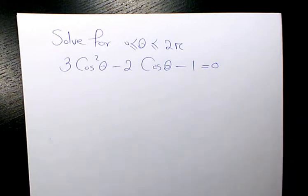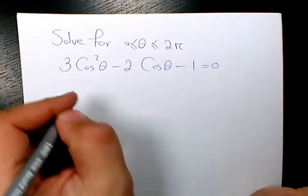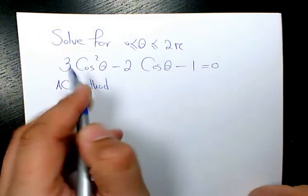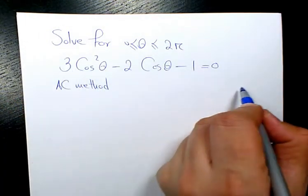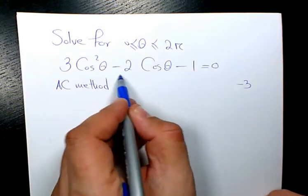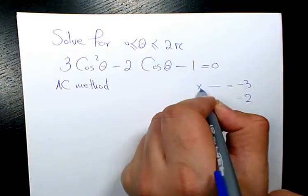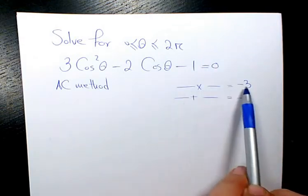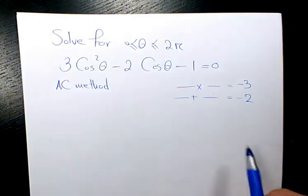First thing I want to do is solve this quadratic equation by factoring. I'm going to use the AC method. AC method is multiply 3 and negative 1, and this coefficient is negative 2, so it means that we are looking for two numbers that multiply to negative 3 and add to negative 2.